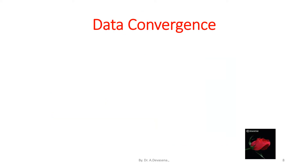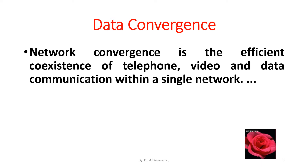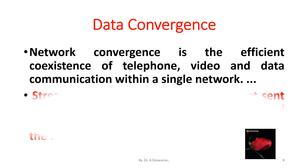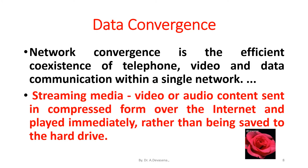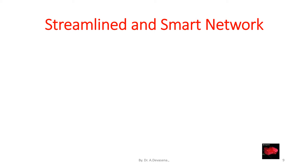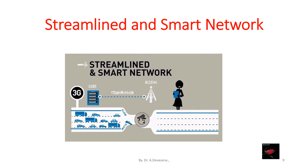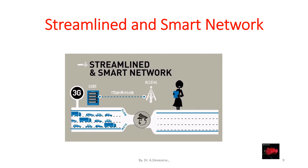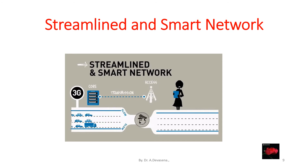We need to know data convergence. Network convergence is the efficient coexistence of telephone, video and data communication within a single network. Streaming media — video or audio content sent in compressed form over the internet and played immediately rather than being saved to hard drive — this is known as data convergence. For video calls, video streaming is very important. That video streaming is being done by 3G networks, because the transmitter and receiver have to be connected properly without any interruption for the video call to proceed. For that, we are using a streamlined network.